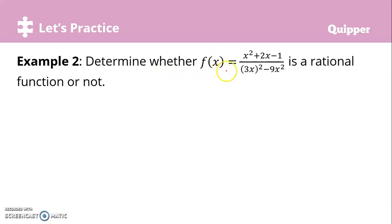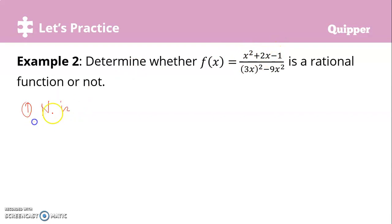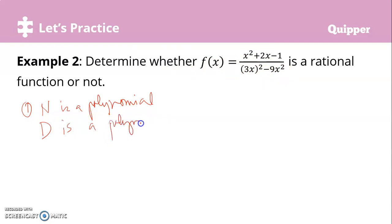Let's have another example. Determine whether f(x) = (x² + 2x - 1) / (3x^(2/3) - 9x²) is a rational function or not. First, is the numerator a polynomial? All of the exponents of x in the numerator — 2, 1, and 0 — are whole numbers, so the numerator is a polynomial. What about the denominator? The denominator is also a polynomial. So we pass the first condition.